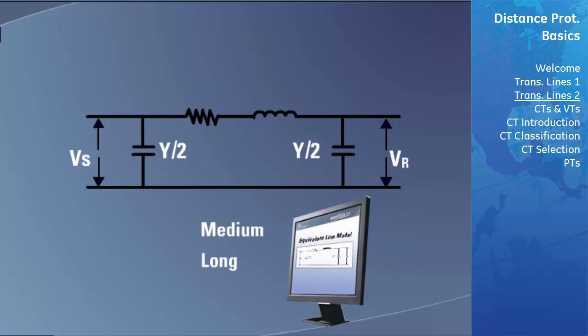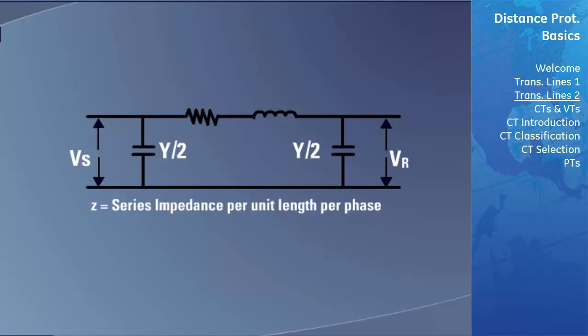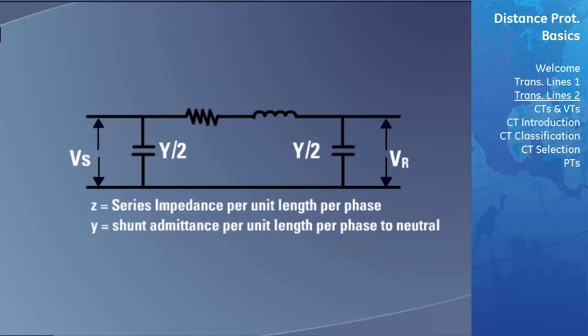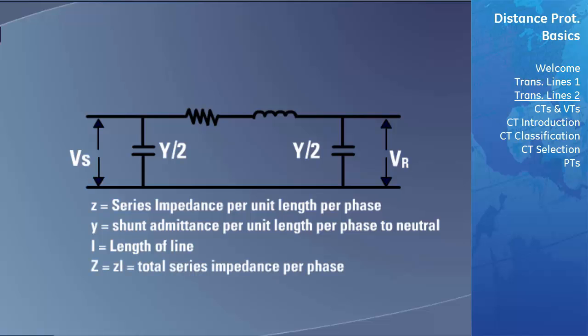For the general Pi model shown here, the following nomenclature is used. Lowercase z is the series impedance per unit length per phase. Lowercase y is the shunt admittance per unit length per phase to neutral. L is the length of line. Uppercase Z equals lowercase z multiplied by L, which is also equal to the total series impedance per phase. Uppercase Y equals lowercase y multiplied by L, which is also equal to the total shunt admittance per phase to neutral.